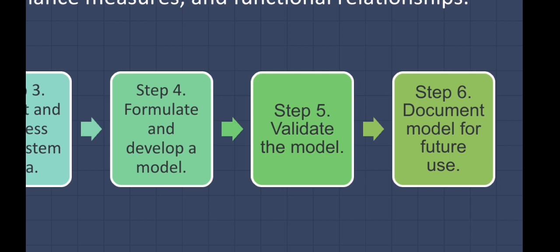Step five is to validate the model. This means comparing the model's performance under known conditions with the performance of the real system. Perform statistical inference tests and get the model examined by system experts. Assess the confidence that the end user places on the model and address any problems. Document the model for future use, including objectives, assumptions, and input variables in detail.